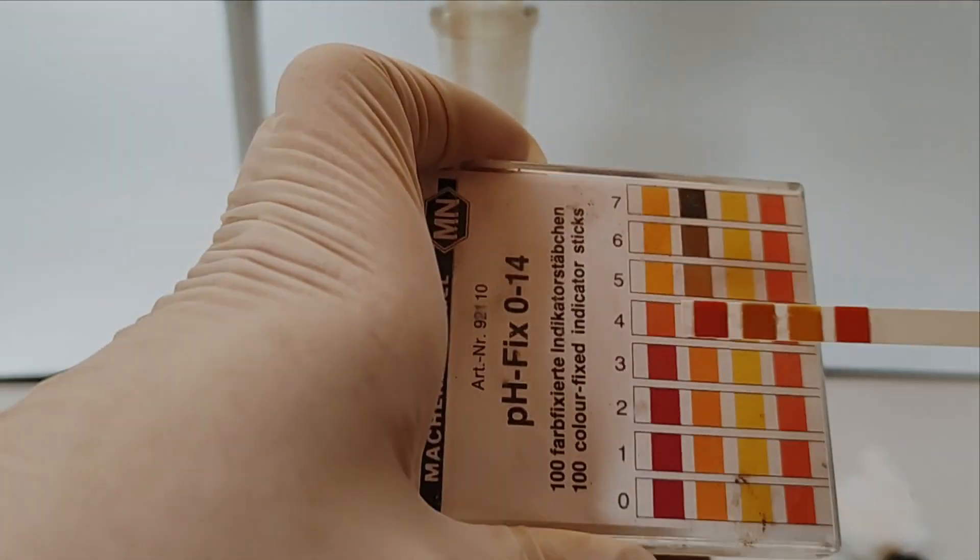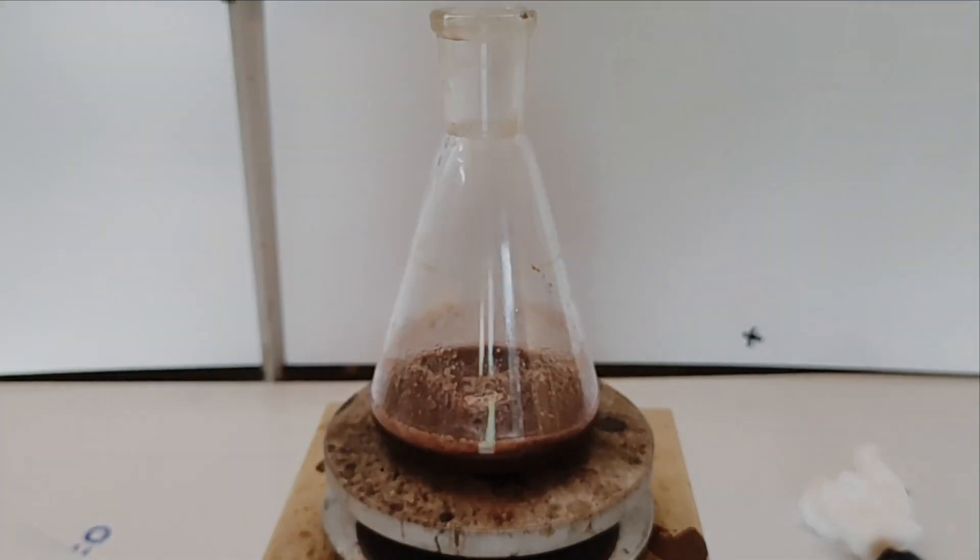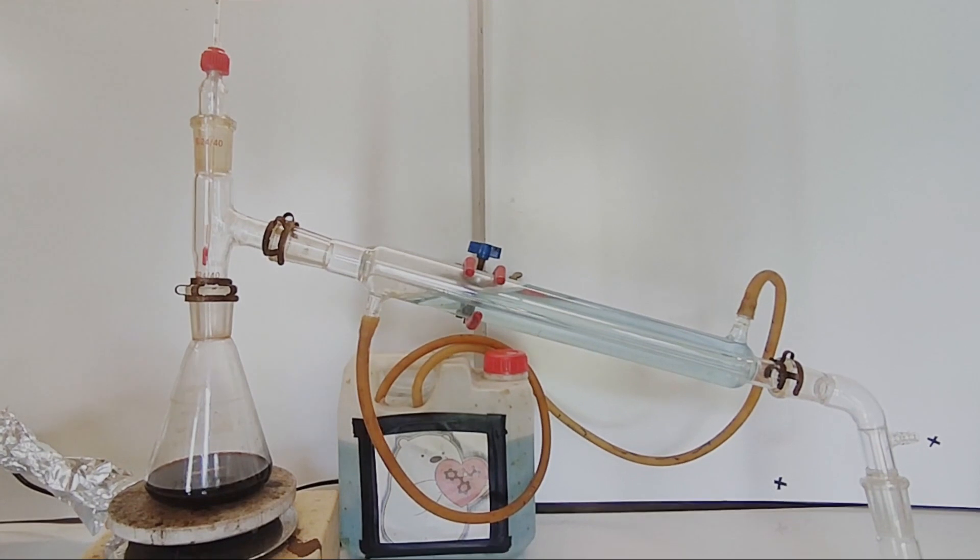We now have a dark brown mixture of our product, remaining starting materials, and various side products formed in the reaction. To get out our desired product, we will have to distill it out.